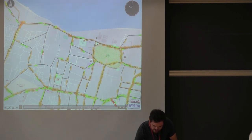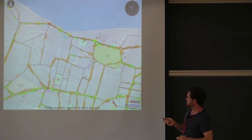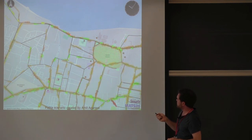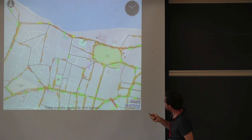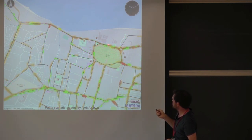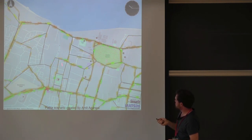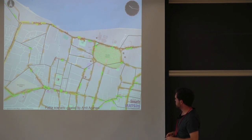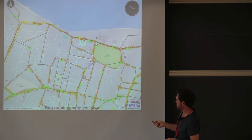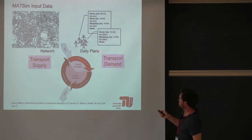Here is a little example of how it looks — a scenario set up by my colleague Amit Agarwal for the city of Patna in India. You can see bicycles here, and the rectangles are cars traveling on the left side because it's India, and the squares are trucks. You can see that vehicles pass one another, which is a comparatively new feature. The different colors indicate whether agents can travel at free-flow speed — green means relatively free, while reddish colors indicate more congestion.